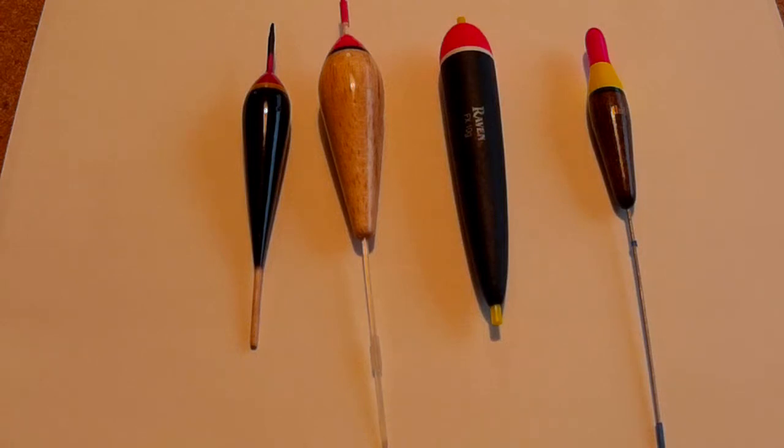First off, the bright colors at the top of the float are for visual identification so that you can see your float when it's in the water. Sometimes it's very difficult depending on movement of the water, how bright of a day it is, etc. But there's also another mark on these floats that you'll notice, and those are the little bands.